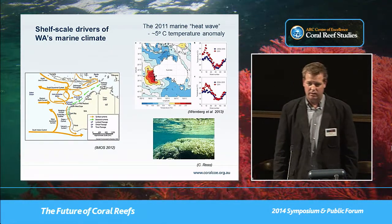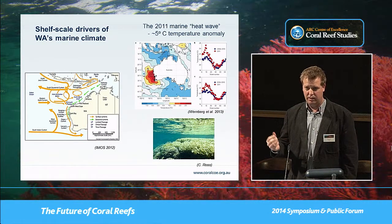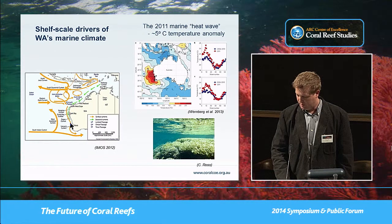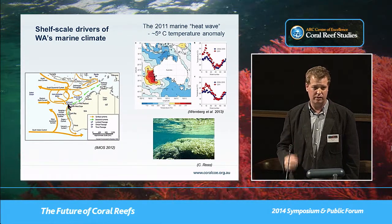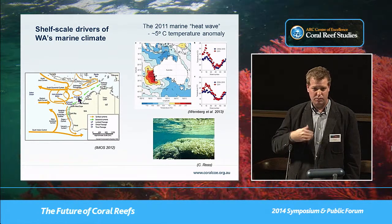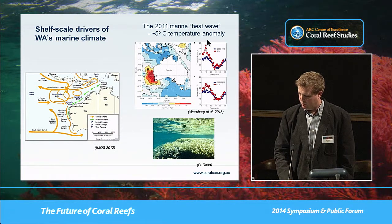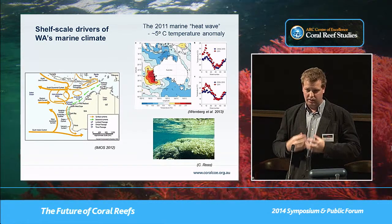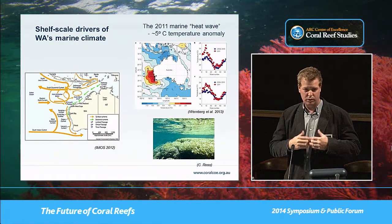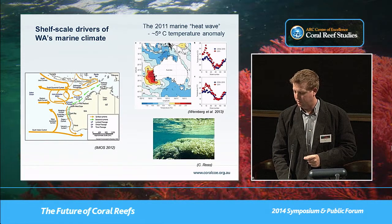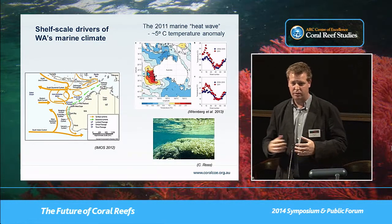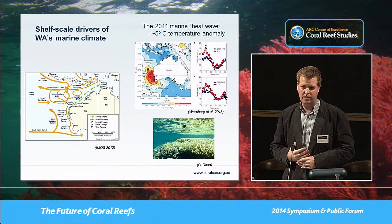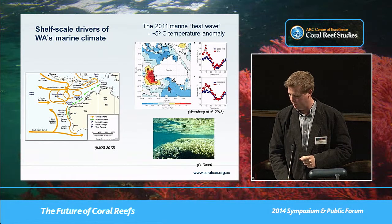I also want to discuss some intermediate shelf-scale processes important to understanding physical variability on reefs. The Lewin current on the WA coast moves warm water down the coast. In the 2011 heat wave during a strong La Niña period, a strengthened Lewin current moved a lot of heat down the coast, generating a five-degree temperature anomaly. This resulted in unprecedented bleaching in many regions of WA, including significant bleaching at Ningaloo, which had no well-documented historical cases of mass bleaching.